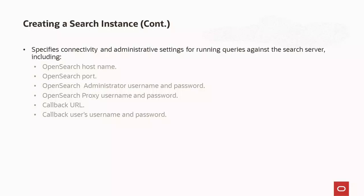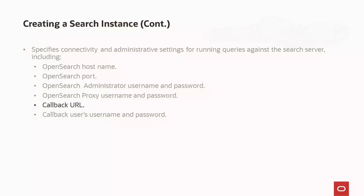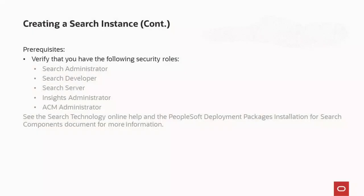In a search instance, you provide values for the host name of the search provider OpenSearch, the port value, the administrator username and password that you entered while running the OpenSearch DPK, the proxy username and password that you entered while running the OpenSearch DPK, the callback URL that points to the gateway defined in Integration Broker, and the callback user's username and password. This user must have the following roles: PeopleSoft User, Search Query Administrator, and Search Server. Before creating the instance, verify that you have the necessary roles: Search Administrator, Search Developer, Search Server, Insights Administrator, and ACM Administrator.